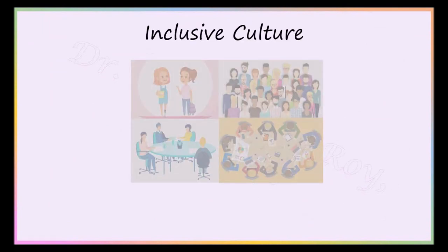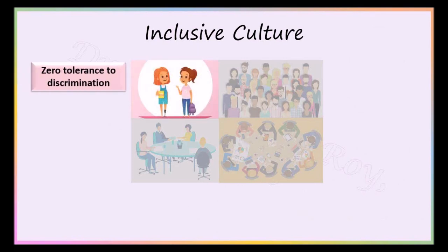An inclusive culture involves the full and successful inclusion of diverse people into an institution. Schools with an inclusive culture follow zero tolerance to discrimination. This means that discrimination between students is not acceptable in any activity that is carried out by the school.